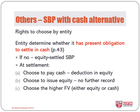If the entity chooses to settle at a higher fair value, whether cash or equity, it needs to recognise additional expense, which is the difference between the cash paid and the fair value of the equity instruments that would otherwise have been issued, or the difference between the fair value of equity instruments issued and the amount of cash that would otherwise have been paid, whichever is applicable.